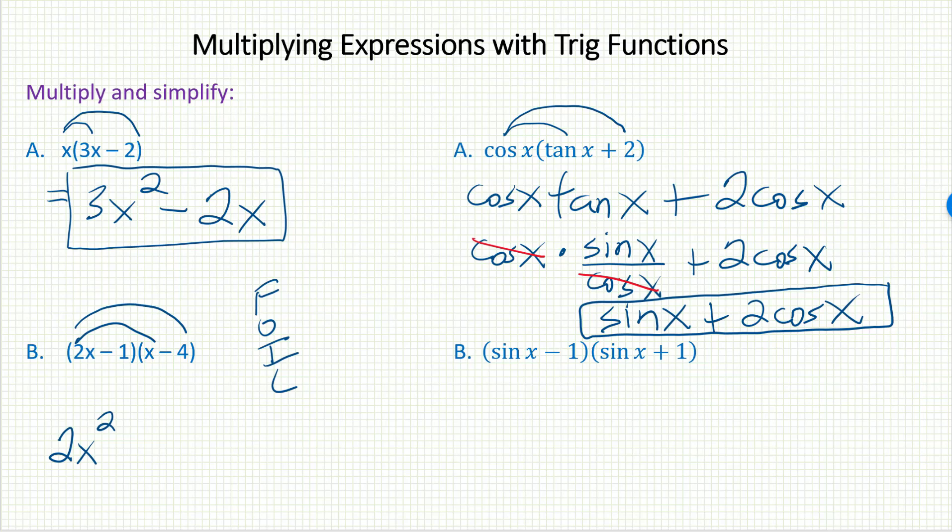Outer would be minus 8x. Inner, minus 1x. And last, plus 4. In terms of simplifying, I can collect like terms. I do have those middle terms that are like. But that's about it. Here would be the final answer.